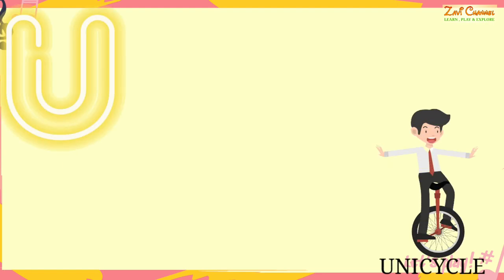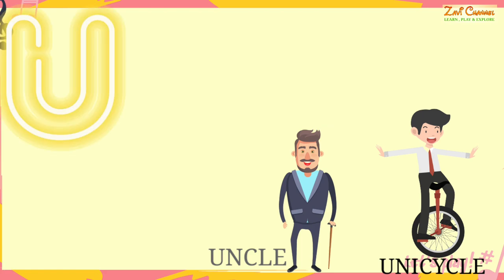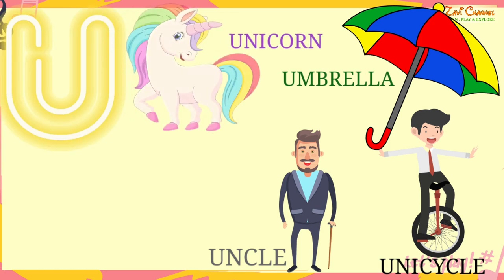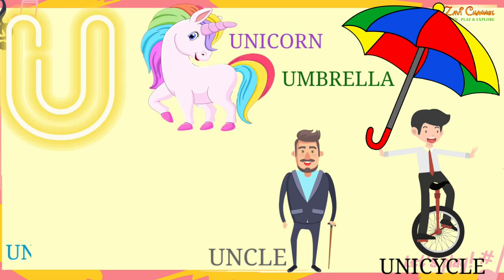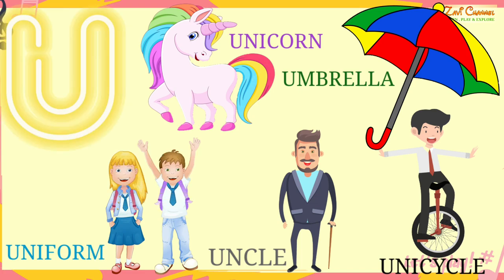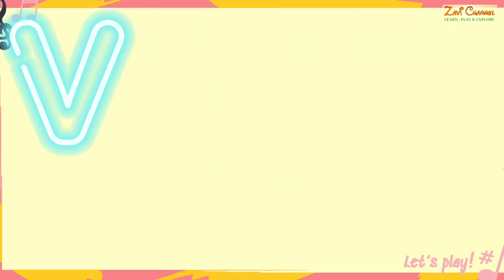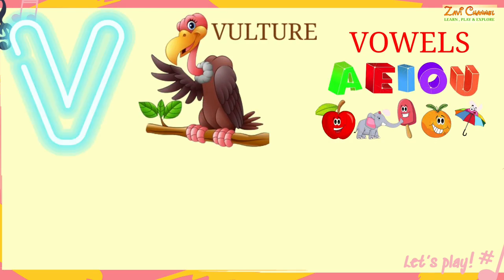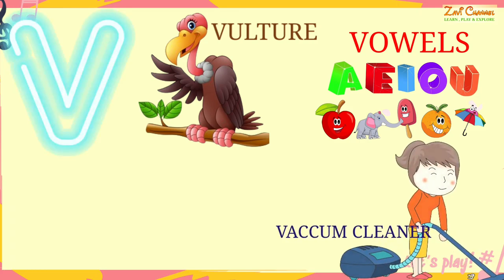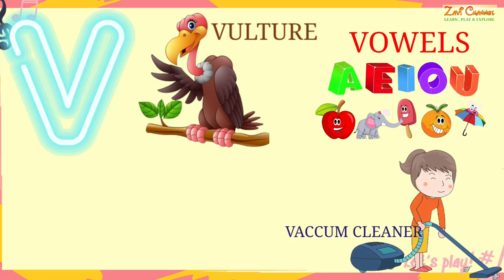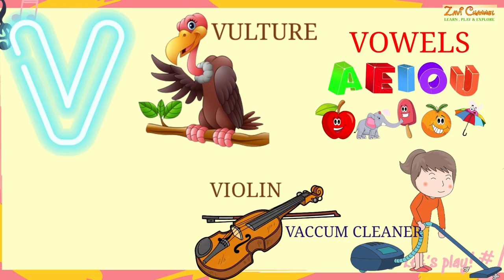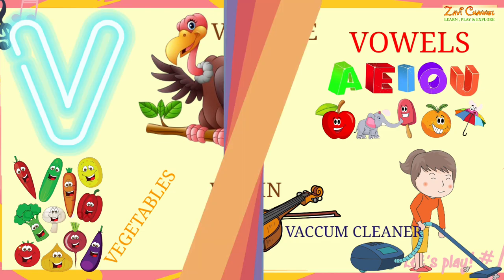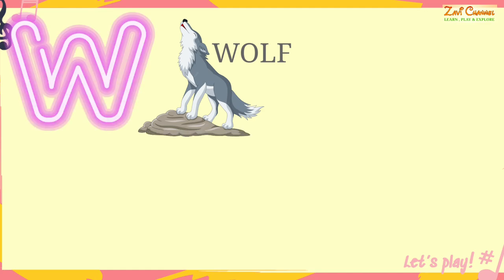U. U for Unicycle, U for Uncle, U for Umbrella, U for Unicorn, U for Uniform. V. V for Vulture, V for Vowels, V for Vacuum Cleaner, V for Violin, V for Vegetables.